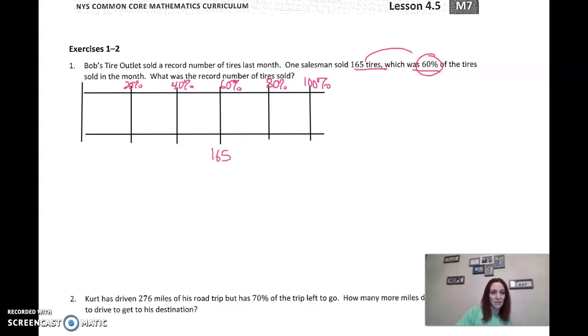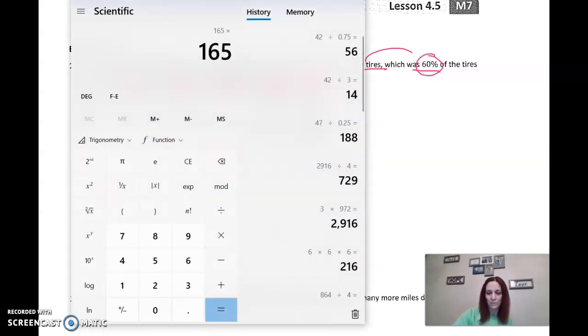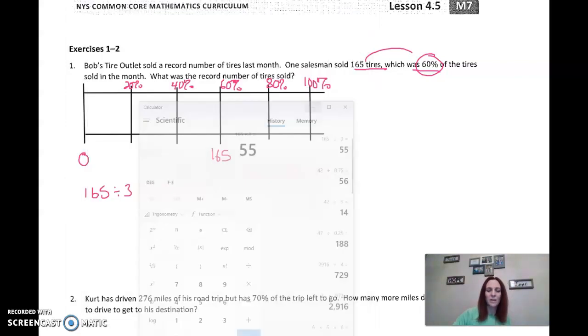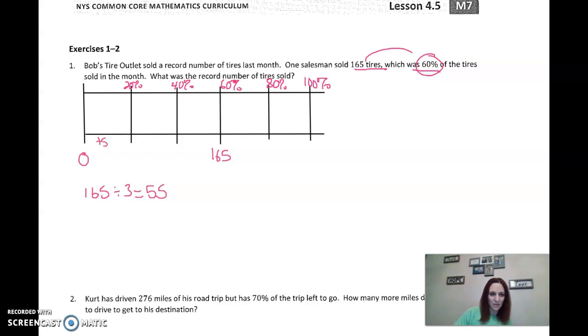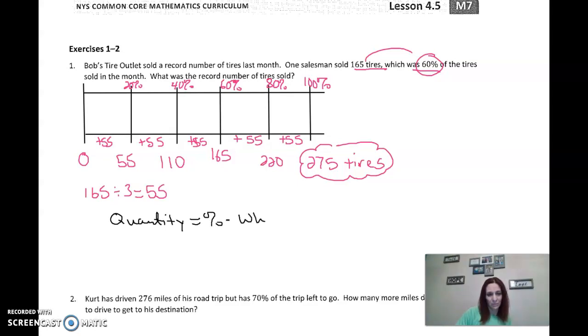Now, 60 matches up with 165. So again, this is 0 right here. I have to go 1, 2, 3 sections. So if I take 165 and divide it by 3, it works out to be 55. So that means each section has 55. So plus 55 would put this at 55. Plus 55 here would put this at 110. Plus 55 is 165. Plus 55 would be 220 at 80%. And if we add another 55, that's 275. So what was the record number of tires sold? 275.